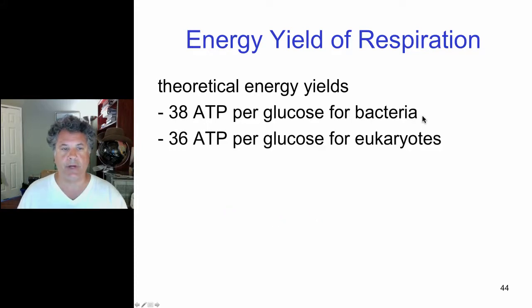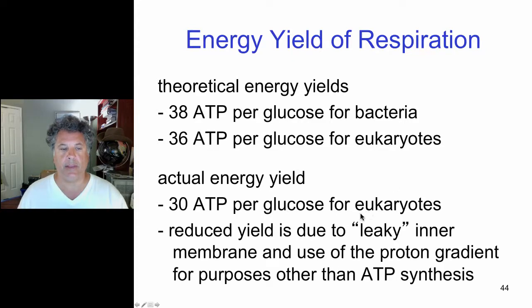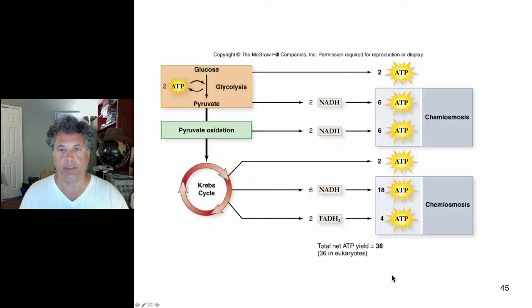So here's our overview and now we can talk about our theoretical energy yields. 38 for bacteria, as we've talked about. 36 for eukaryotes. And the actual energy yield is about 30 ATP per glucose for eukaryotes. And the reduced yield is due to that leaky inner membrane of the mitochondrion and also the use of the proton gradient for purposes other than ATP synthesis, and I've told you one use is to import pyruvate with a symporter. So that accounts for a reduced actual yield.